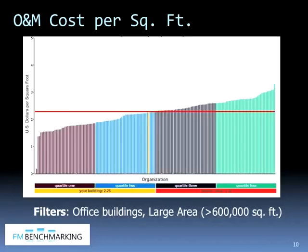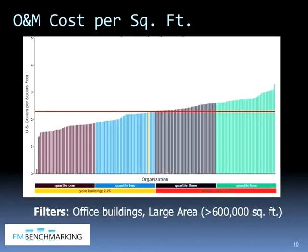Here's an example of one of the reports — the O&M cost per square foot. On this chart, we break the groups up into quartiles. The extreme left is the first quartile in light purple, the next quartile is blue, and our building is shown towards the top end of the second quartile in yellow. If you had multiple buildings in this report, you'd have multiple yellow lines with the names of your buildings. FM benchmarking data is confidential — your building data is only compared and available to you. The dark red line is the median, and the third and fourth quartiles are shown in darker purple and green.